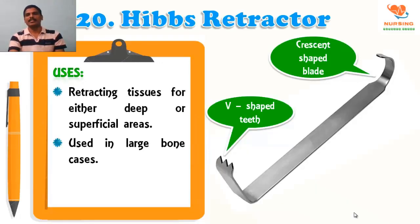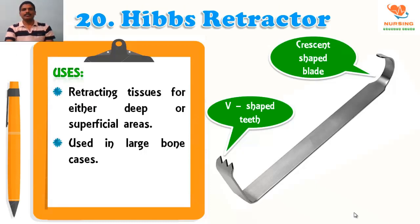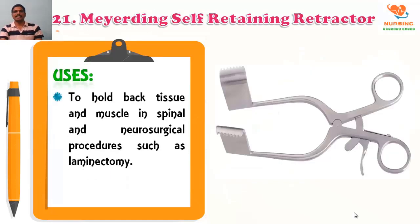Retracting and weaving: hip retractor is used for retracting tissues in either deep or superficial areas and used in large bone cases. Both blade ends can be utilized — one end is V-shaped and the other is crescent-shaped. Self-retaining retractor is used to hold back the tissue and muscle in spinal and neurosurgical procedures, especially in laminectomy.